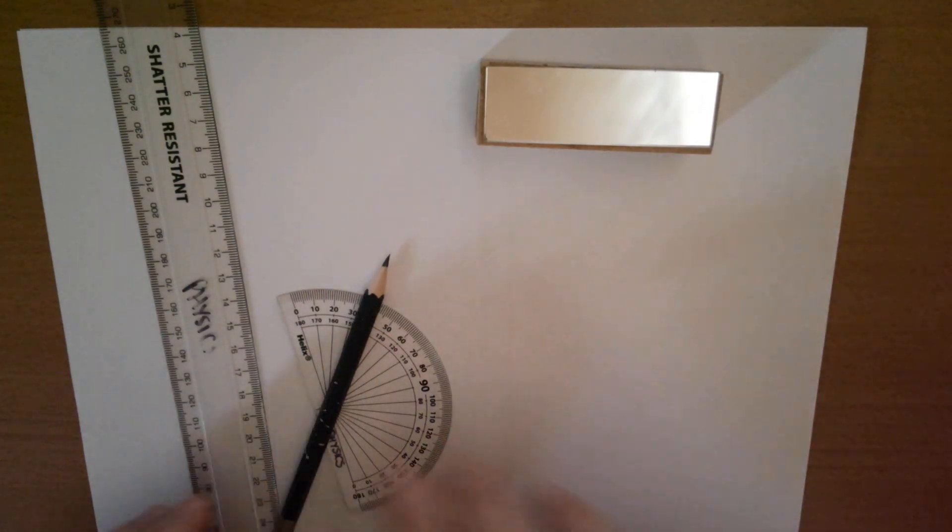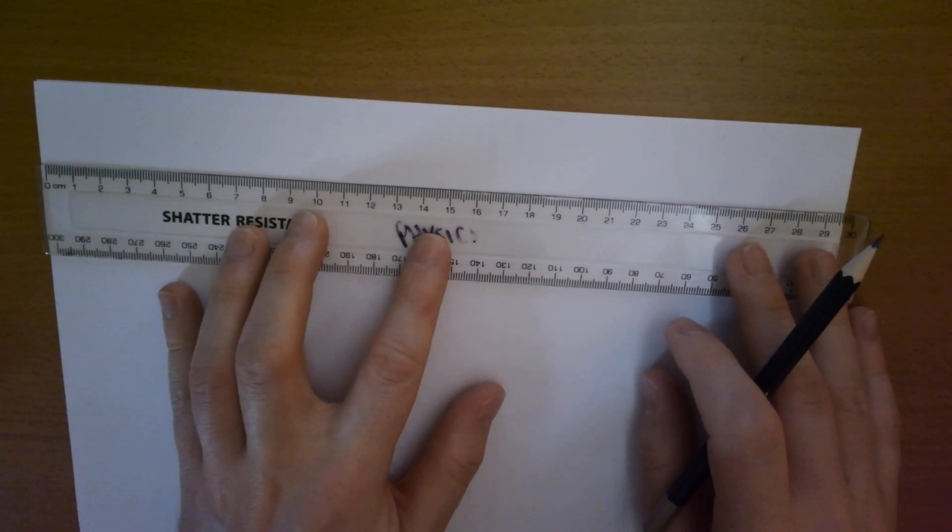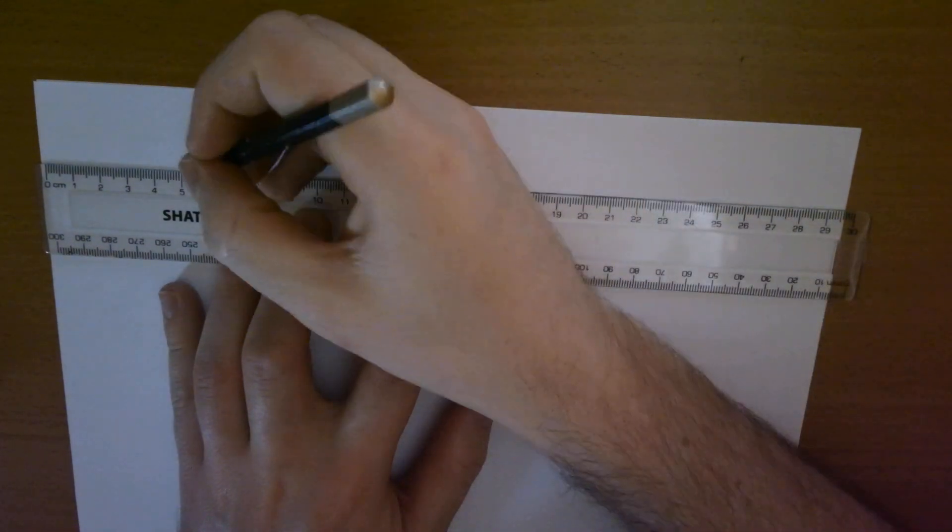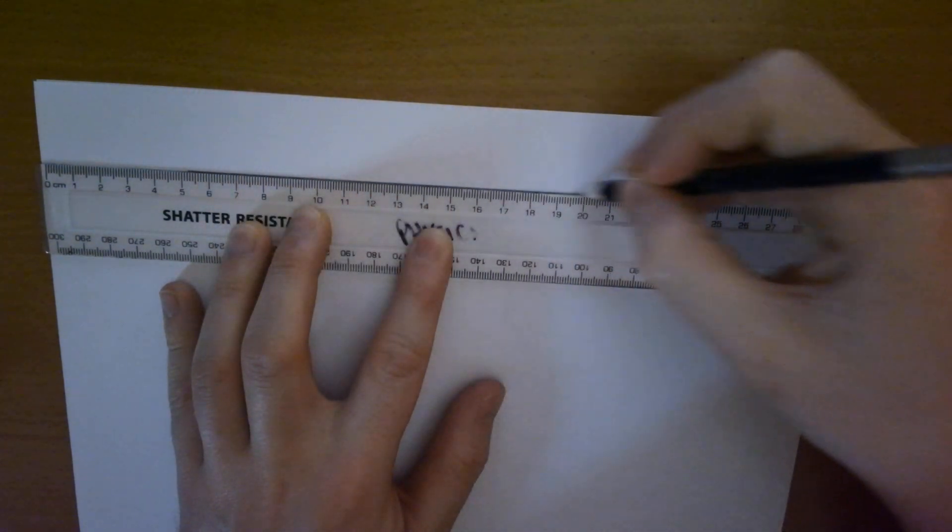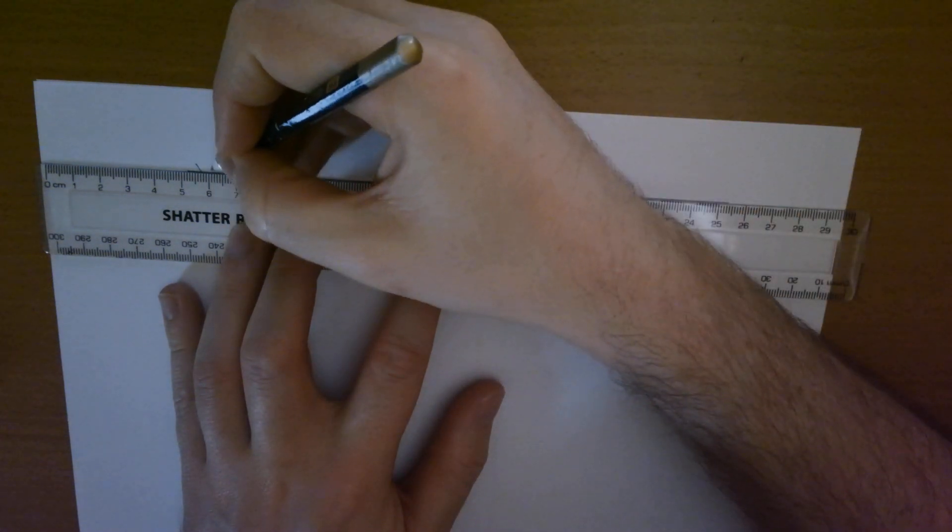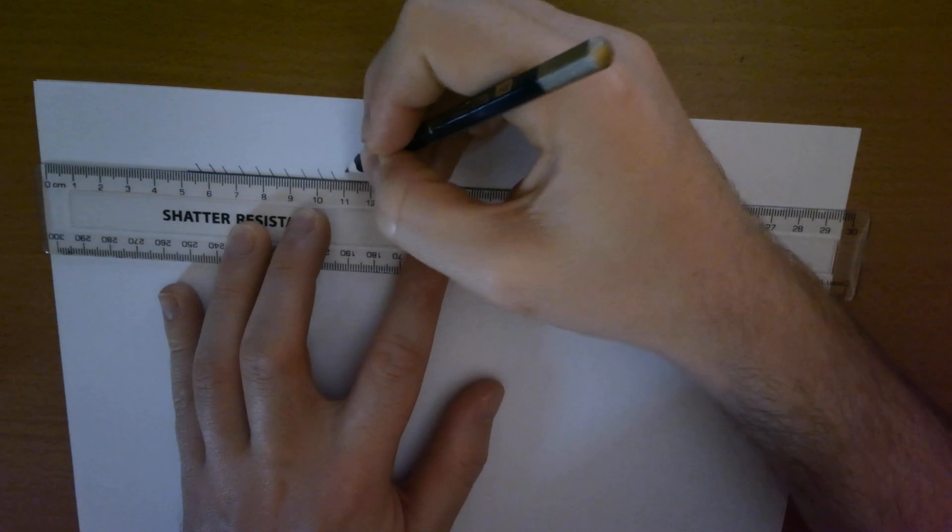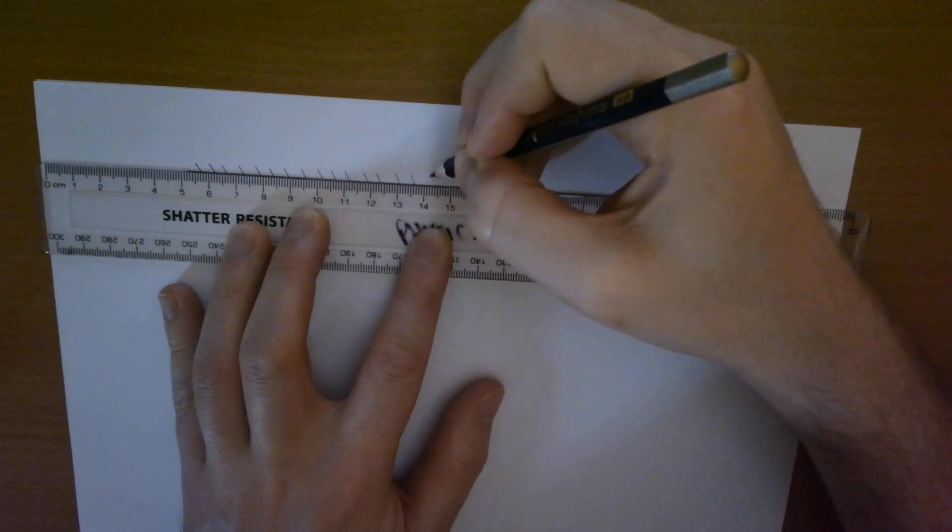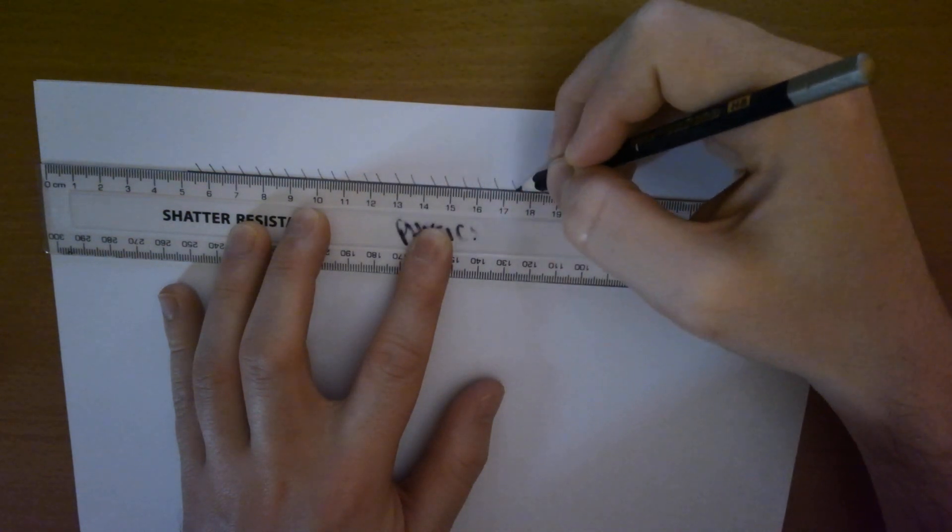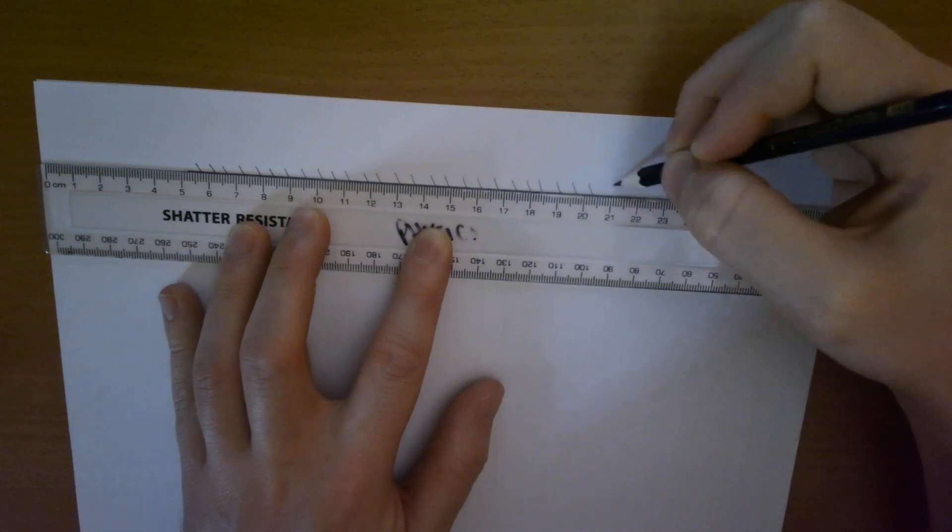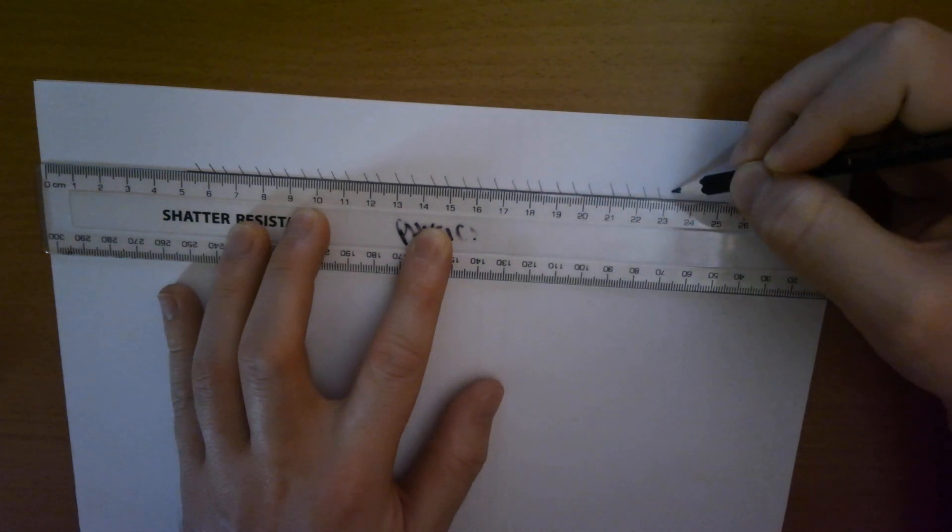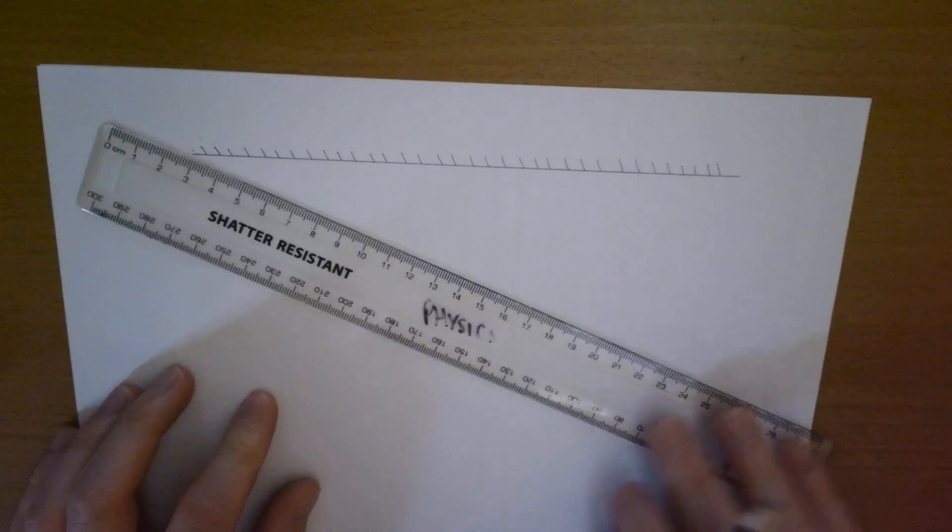Where we're going to start is by drawing a mirror line. I'm giving myself plenty of room to work with here. The hash lines behind the line indicate that it is a mirror. That represents where the mirror is going to go.